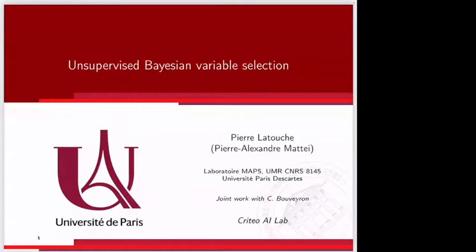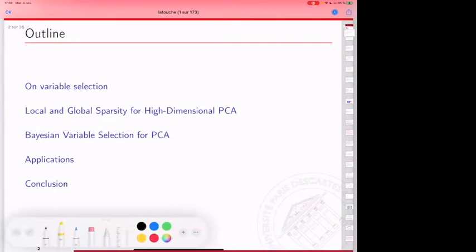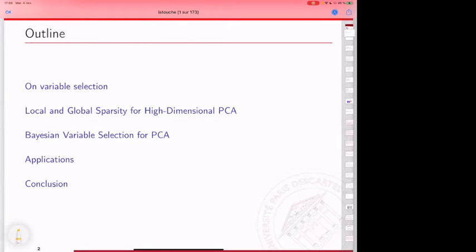I believe we found an interesting avenue of research which is quite general. I'm going to present it, starting with something simple — the linear model — which is the first work we published on this, and then apply it to unsupervised learning. The plan: I'll focus on variable selection, starting with linear regression to fix ideas, then move to the unsupervised setting, the Bayesian framework, some applications, and conclude.